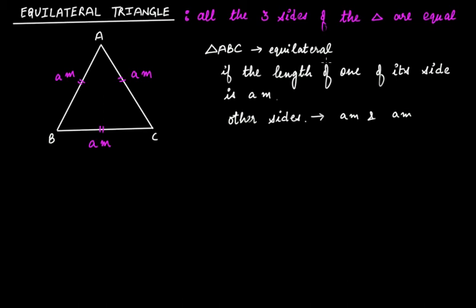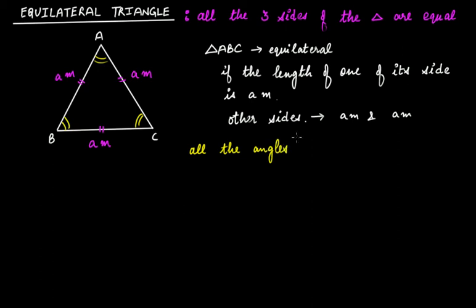The next point we want to discuss about equilateral triangle: if in any triangle all the three sides are equal, it means all the angles made by the sides of the triangle will also be equal. That is, angle BAC will be equal to angle ACB will be equal to angle CBA. So in an equilateral triangle, not only all the three sides are equal, but all the angles are also equal.